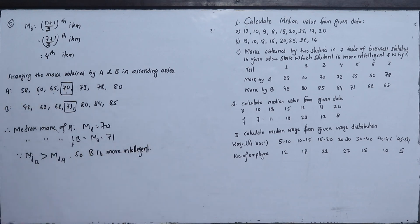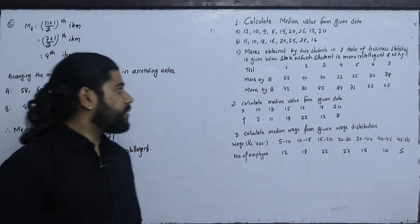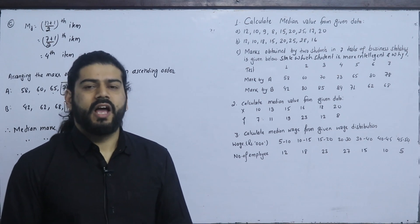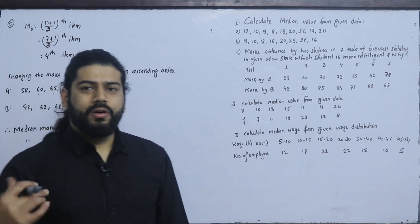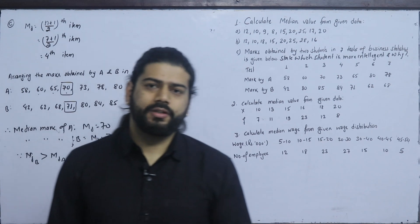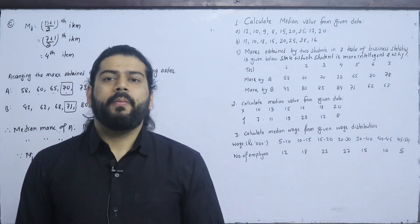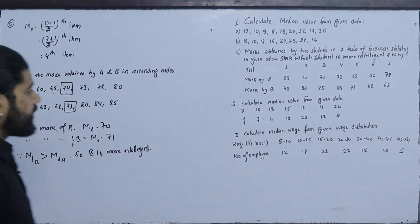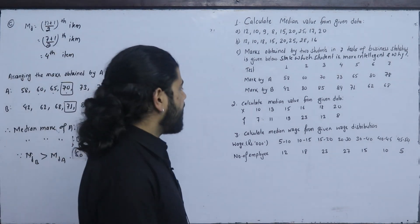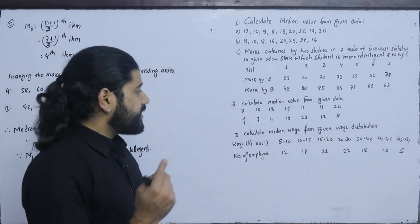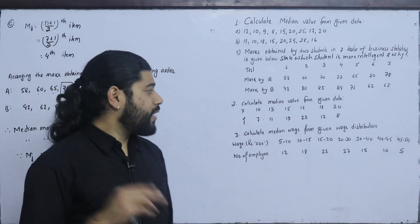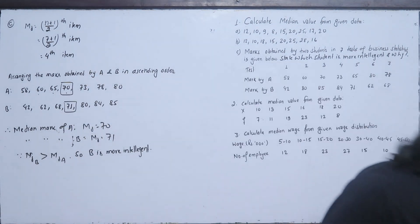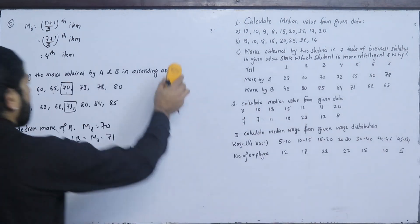Also, to support the choice of measure: this is qualitative data, so median is appropriate — not mean or mode. Now we move to the next question: calculate the median value from the given data. We have a discrete series, where we use cumulative frequency (CF). The formula is (n+1)/2, then locate CF. In the continuous series, we use the CF formula with class intervals.